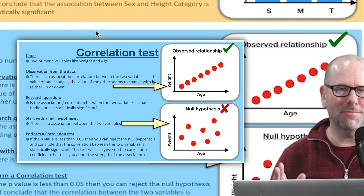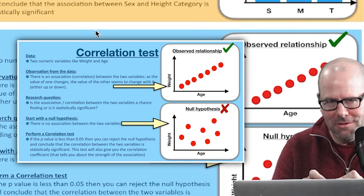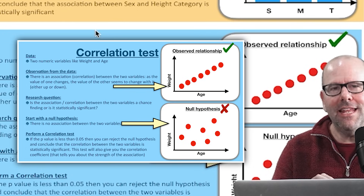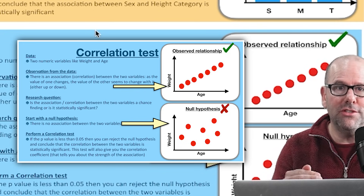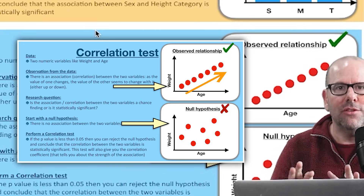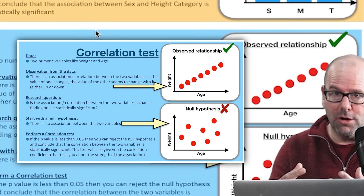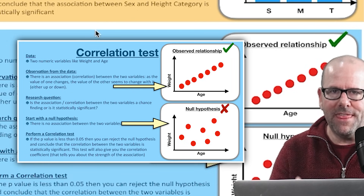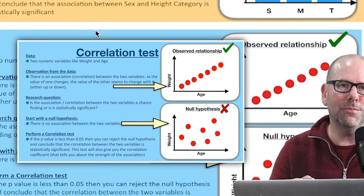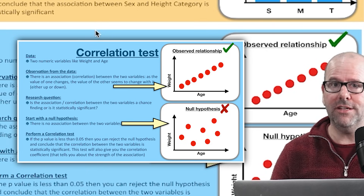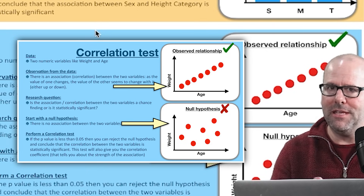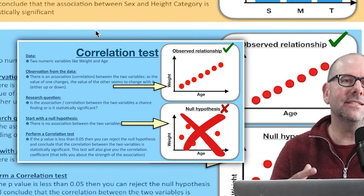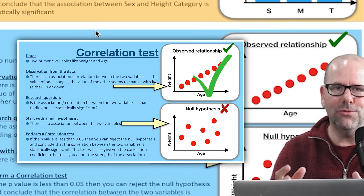And for the correlation test, the exact same principles apply. In this case, we've got two numeric variables — no categorical variables. So let's imagine we've got weight and age. Both are numeric variables, and you can imagine there could be an observed association between the two: as age goes up, weight goes up — a correlation. We take a sample, observe a correlation, and ask: is that real? Is it statistically significant? Or might it be that there's no correlation and by chance we happened to get a sample where this correlation erroneously seemed to exist? We do a correlation test, get a p-value, and if the p-value is very small, we must accept that there is in fact some sort of correlation between the two numeric variables.